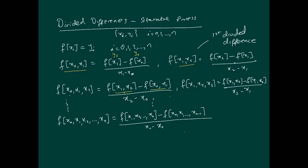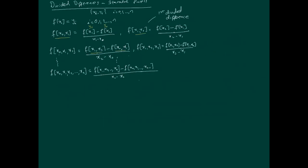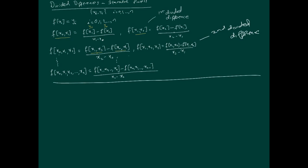One thing I forgot to mention: f[x0, x1] is called the first divided difference, f[x0, x1, x2] is the second divided difference, and so on up to the nth divided difference. Now let me put everything in tabular form — this is how you'll practically solve a particular problem. We have the data points xi and f(xi).